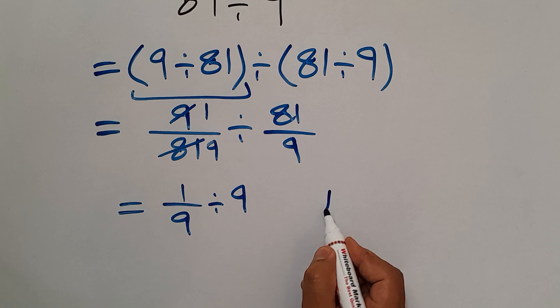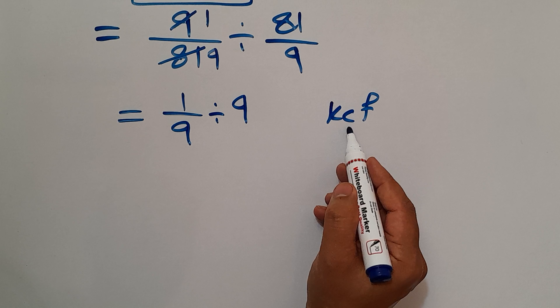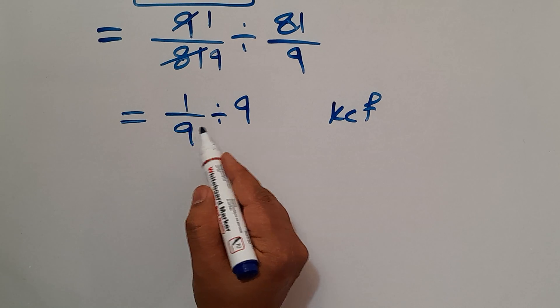Here according to the KCF rule: K stands for keep, C stands for change, and F stands for flip. Keep the first fraction.